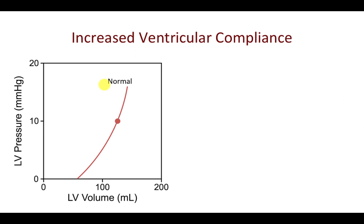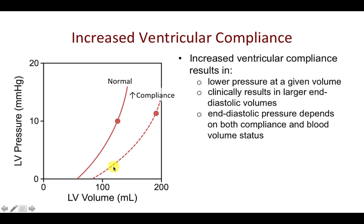Finally, let's look at the effects of increased ventricular compliance. The curve shifts down to the right; the unstressed volume is increased because we now have a dilated ventricle, and the slope of the curve is reduced. With increased ventricular compliance, this results in a lower pressure at any given end-diastolic volume. Clinically, there is typically a large increase in end-diastolic volume, usually accompanied by an increase in end-diastolic pressure due to altered volume status and volume overload, which drives up pressure along the right-shifted curve.